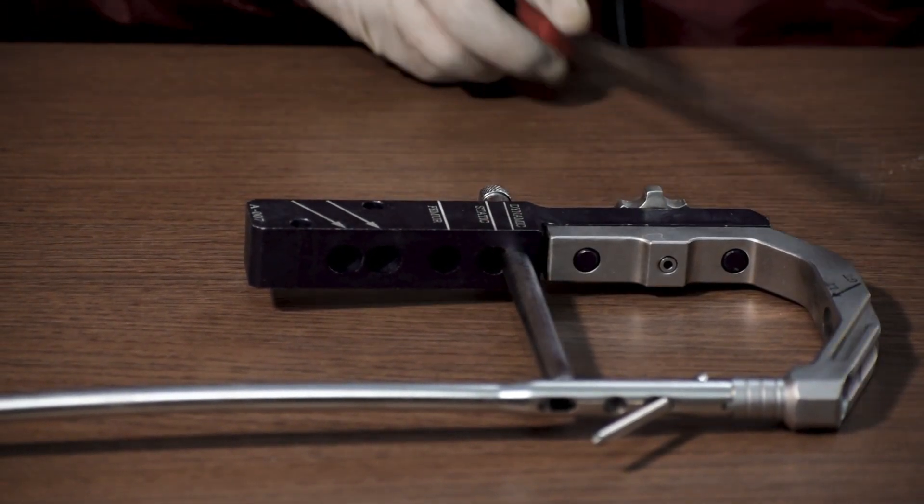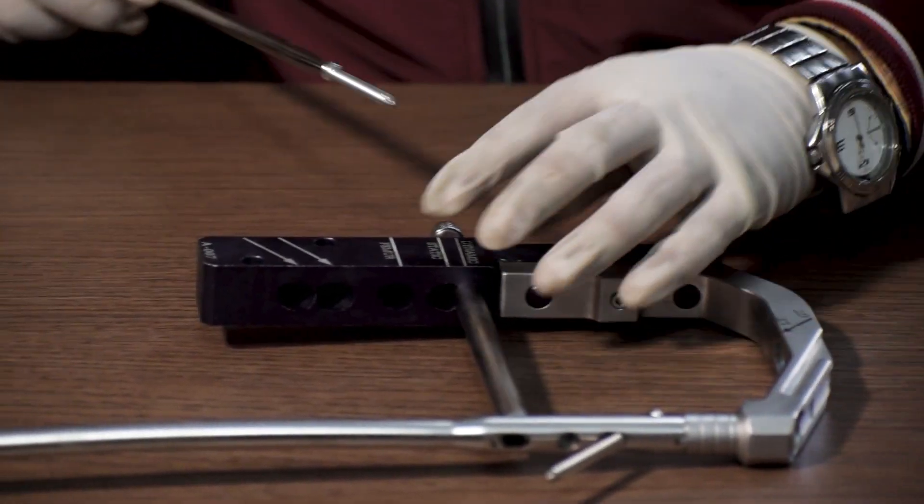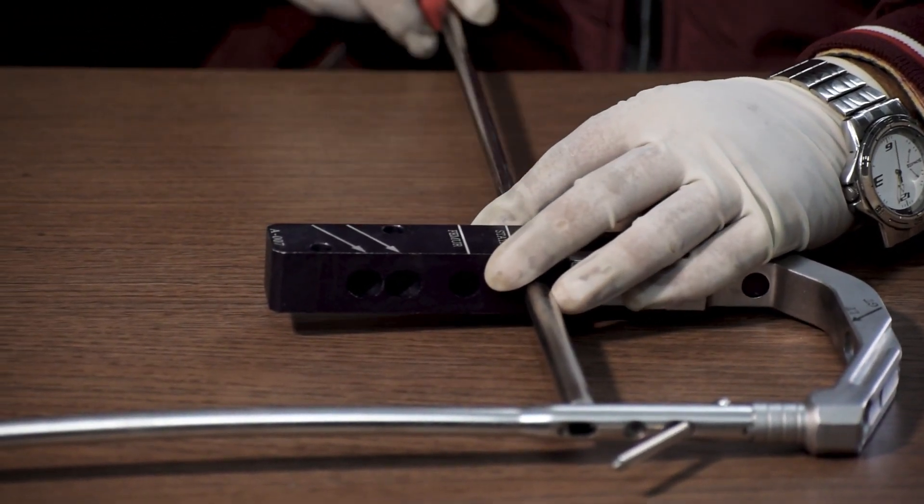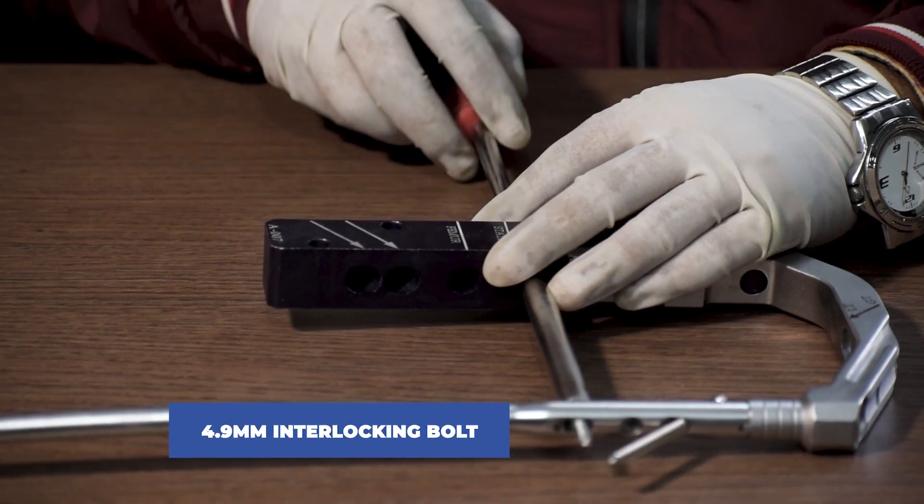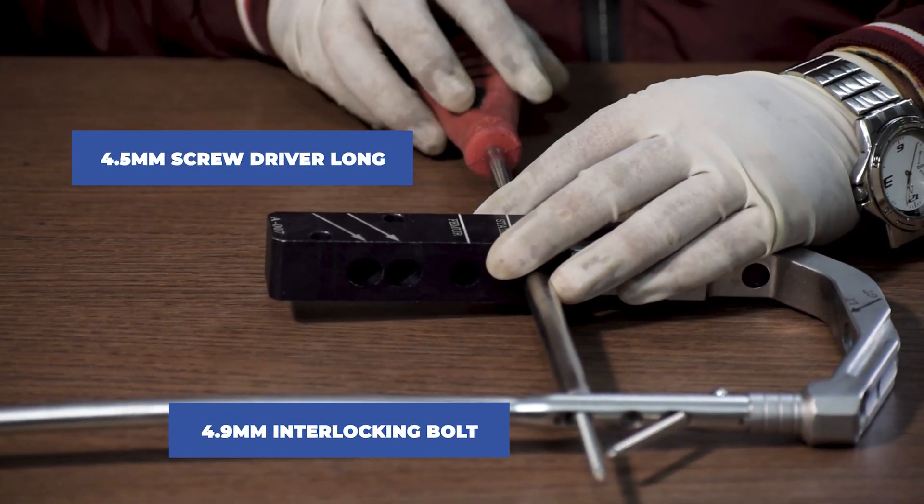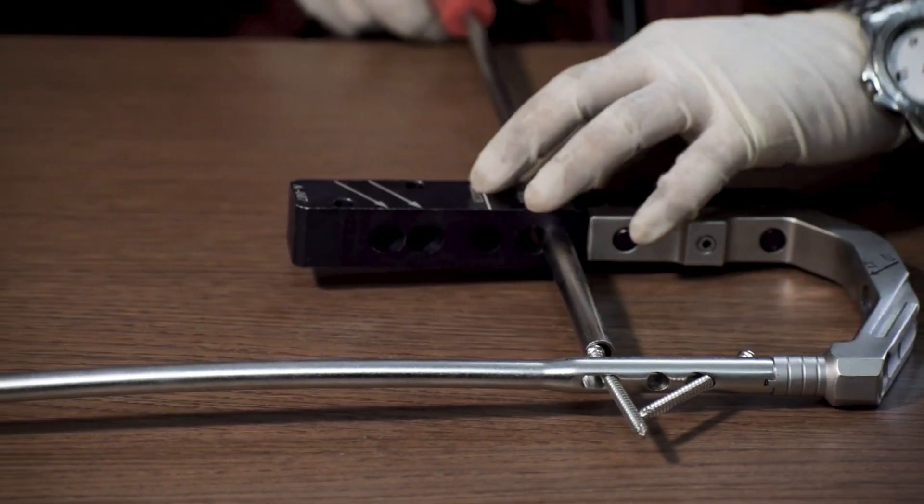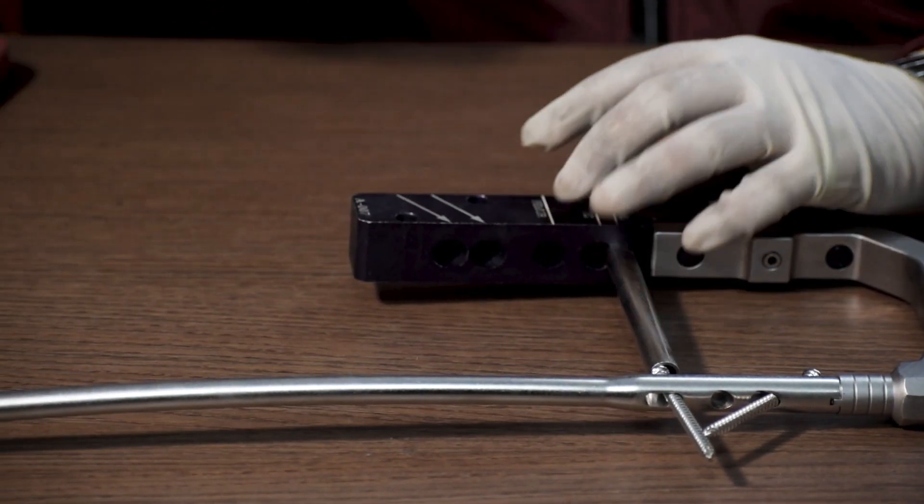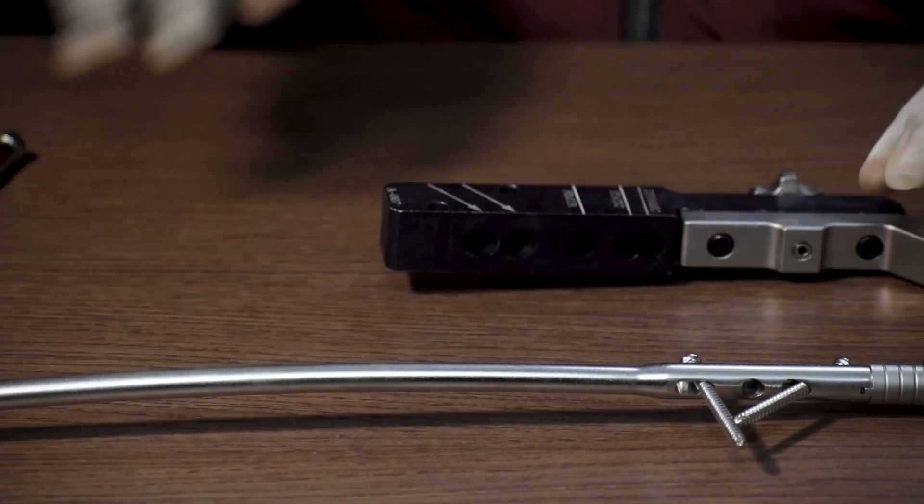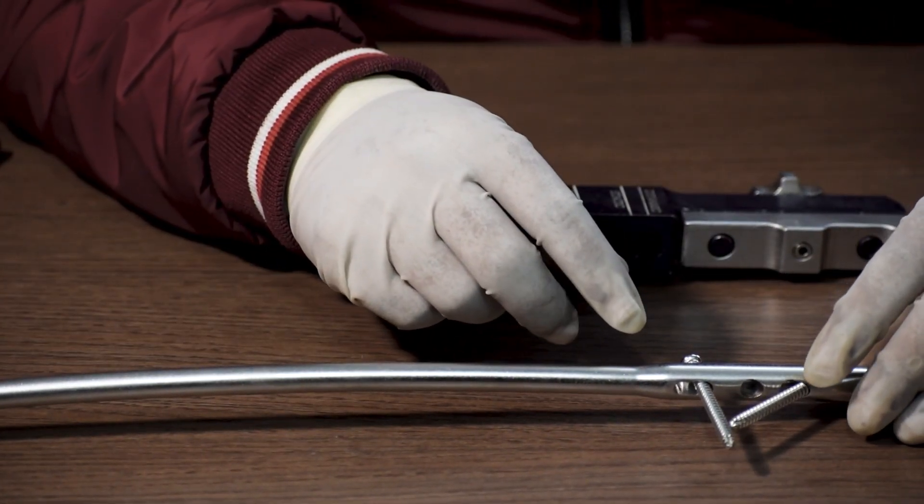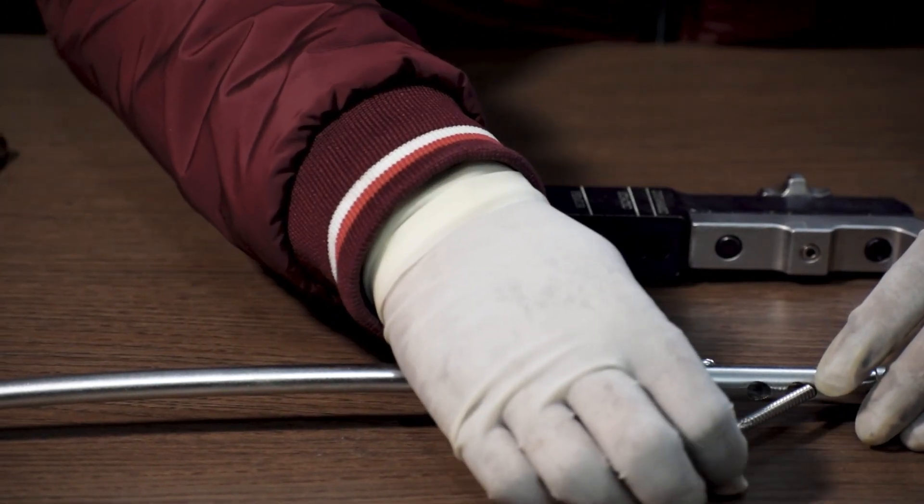Once done, we will fix a 4.9mm interlocking bolt with a 4.5mm long handle screwdriver. And then remove the sleeve once the procedure is done. This was the GT2LT fixation option for AFN Nail.